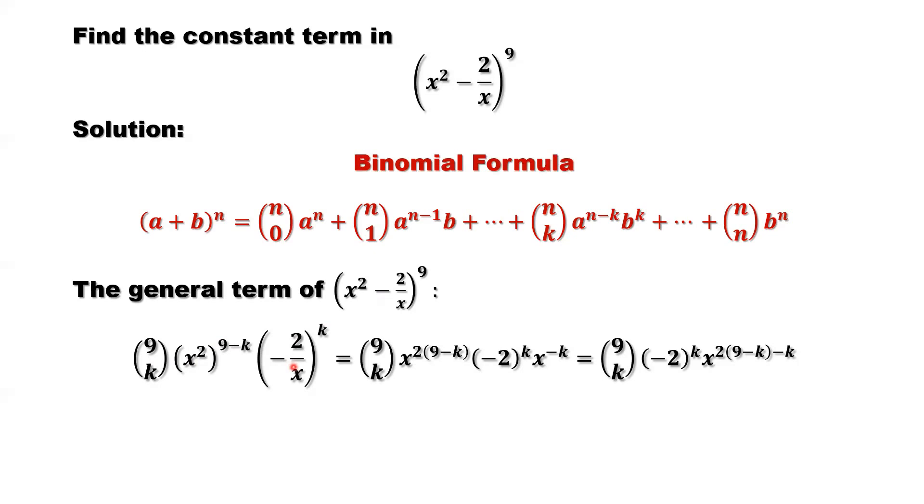Simplify. That's 9 choose k, x to the power 2 times 9 minus k, times negative 2 to the power k, times x to the power negative k. Where comes the negative sign? Because 1 over x equals x to the power negative 1, and negative 1 times k is negative k.